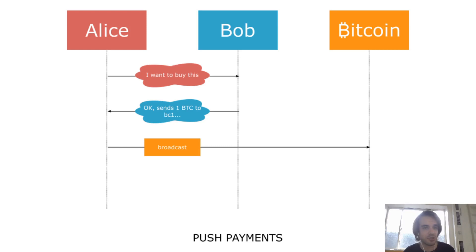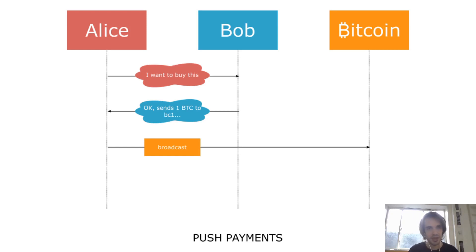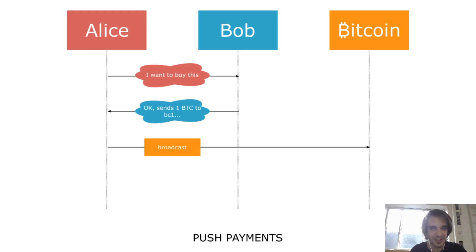Take an example: Alice wants to buy something. Bob replies, okay, you can buy — send one BTC to this address — and then Alice broadcasts the transaction. One thing to note is that this model is basically what most people are doing when they use Bitcoin, but in real life, this is not the kind of model that you typically use.